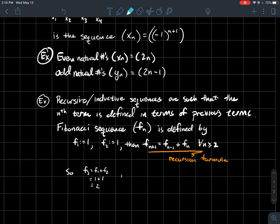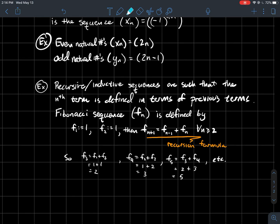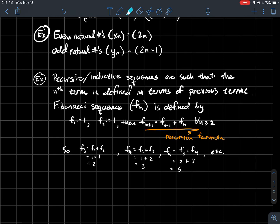For instance, f₃ by the formula should be f₁ plus f₂. And those are the two values that I was given. 1 plus 1 is 2. So the third term of the Fibonacci sequence is 2. f₄ should be f₂ plus f₃, the sum of the two previous terms. That's 1 plus 2, which is 3. And then f₅ would be f₃ plus f₄, and that should be 5. And you carry on this way to get all the terms in the Fibonacci sequence.